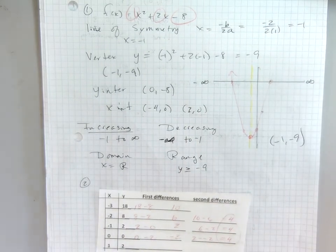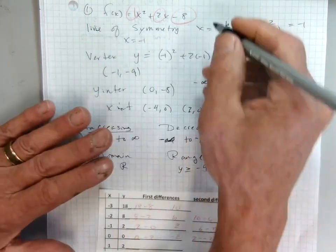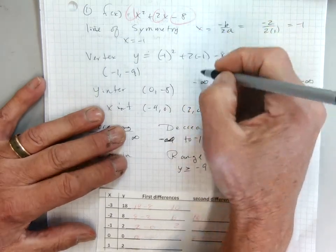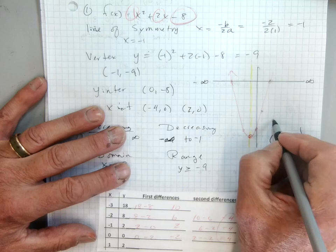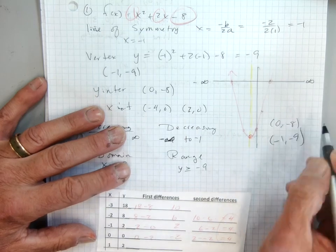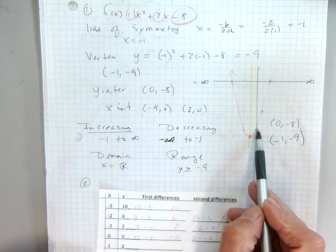The y-intercept is pretty easy in this form because the y-intercept is simply that number right there, negative 8. So my y-intercept is 0, negative 8. Because I have a line of symmetry, I can reflect it.